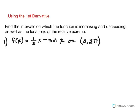So if you think of the process, remember that in order to determine where a function is increasing or decreasing, it's going to be at our critical numbers. So we need to find those first, and remember that we determine critical numbers by finding the derivative. The derivative of this function is going to be 1 half minus cosine of x. Our critical numbers are where the derivative equals 0 or where the derivative does not exist.